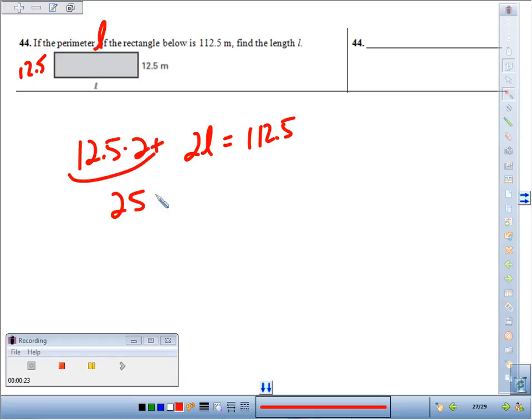This gives me 25 plus 2L equals 112.5. Subtract 25 from both sides and we get 2L equals 87 and a half.